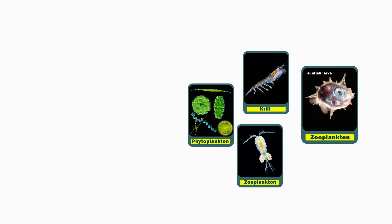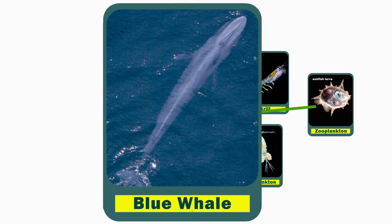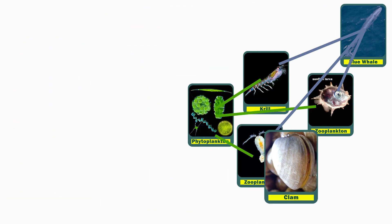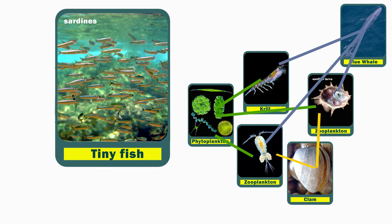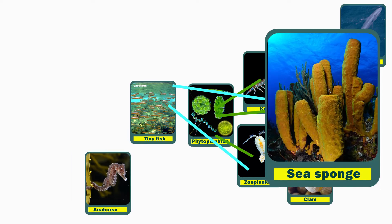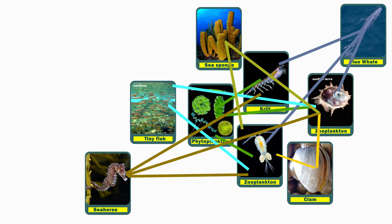Zooplankton don't just get eaten by whales, right? Clams eat zooplankton and little fish eat them too. So do seahorses and sea sponges, and that's just getting started.